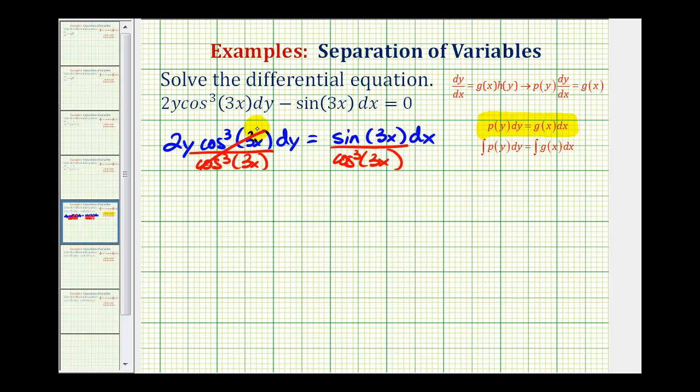So this simplifies to 1, so we have 2y dy on the left side. And now on the right side we do only have x's and dx, but notice how we have one factor of sine x in the numerator and three factors of cosine 3x in the denominator.